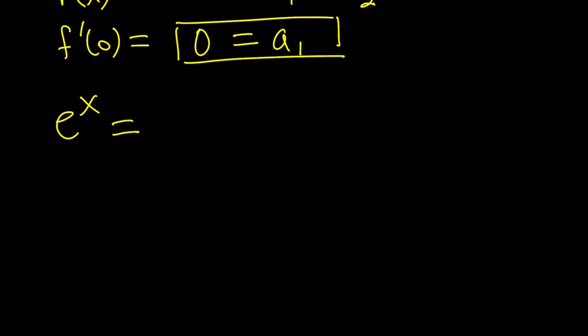Anyways, e to the power x can be written also as a polynomial, an infinite polynomial, and it's equal to or equivalent to 1 plus x plus x squared over 2 factorial plus x cubed over 3 factorial. So, this is e to the power x.